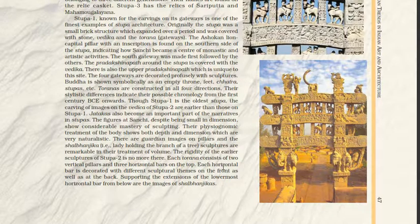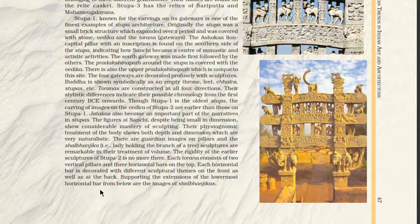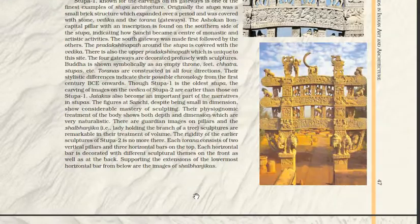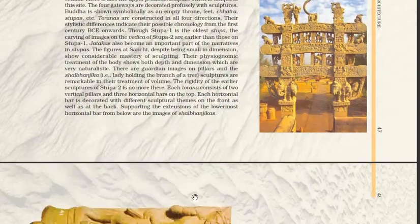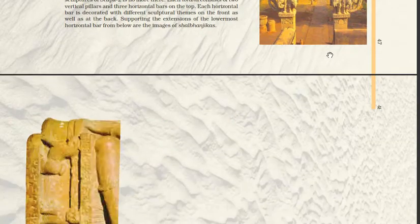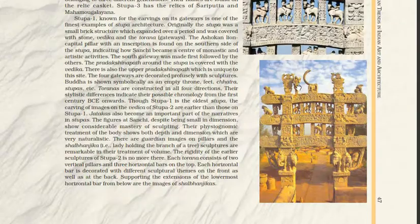Each Torna consists of two vertical pillars and three horizontal bars on top. Each horizontal bar is decorated with different sculptural themes on the front as well as the back. Supporting the extensions of the lowermost horizontal bar from below are the images of shalabhanjika.